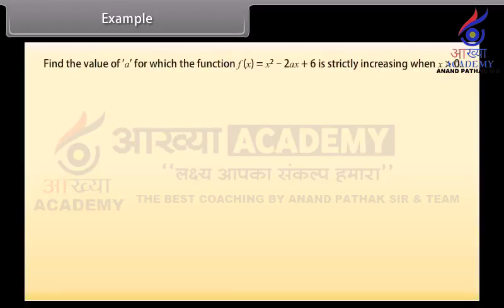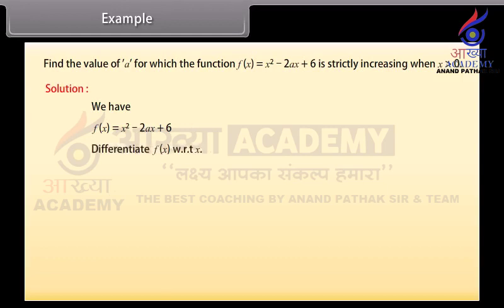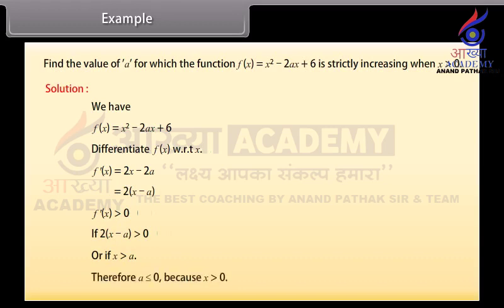Example: Find the value of a for which the function f of x equals x squared minus 2ax plus 6 is strictly increasing when x is greater than 0. Solution: f dash of x equals 2x minus 2a equals 2 times (x minus a). f dash of x is greater than 0 if x is greater than a. Therefore, a is less than or equal to 0, because x is greater than 0.